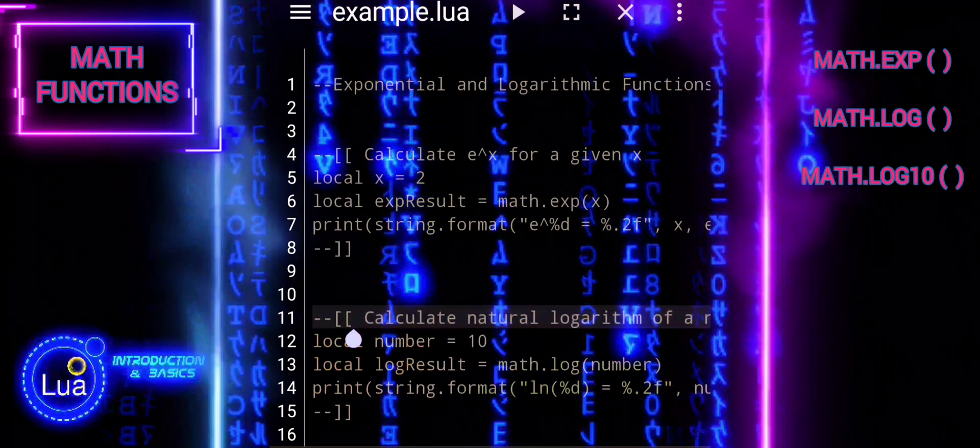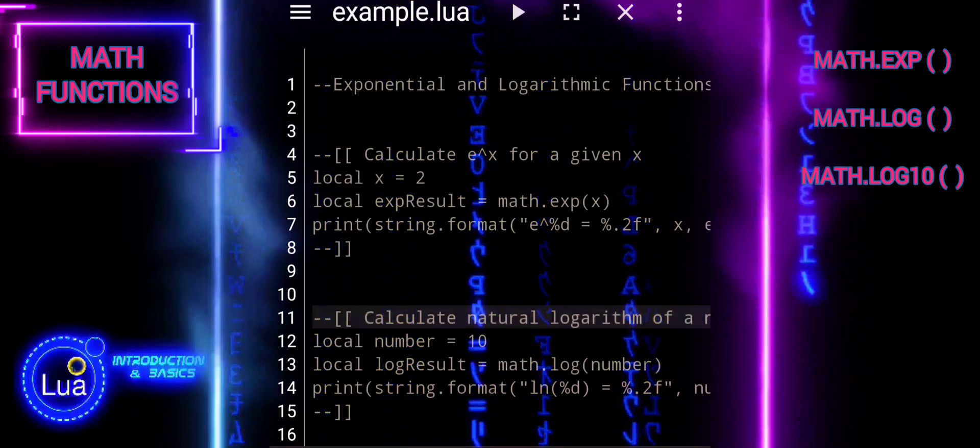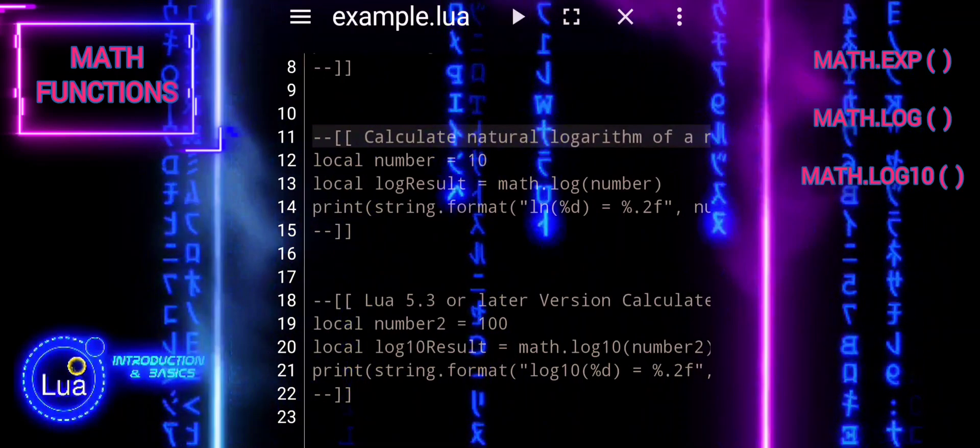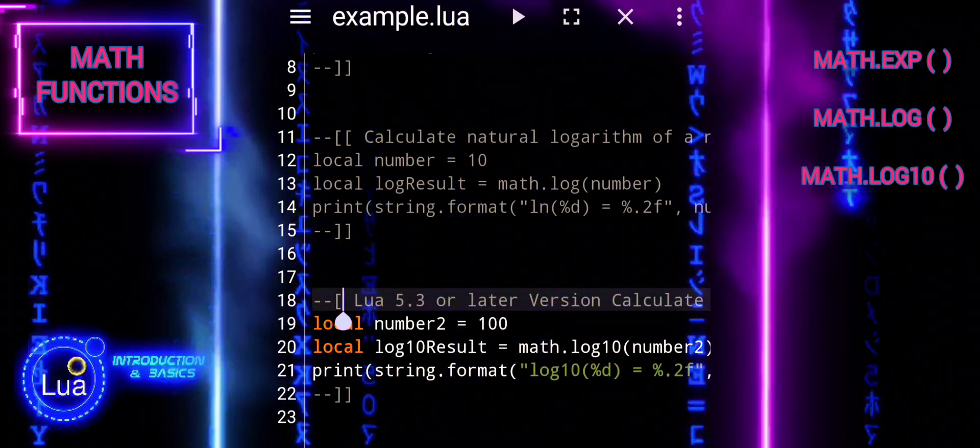Overall, this code calculates and prints the natural logarithm of 10, demonstrating the usage of the math.log function in Lua. Math.log10 is a built-in mathematical function in Lua that calculates the base 10 logarithm of a number.